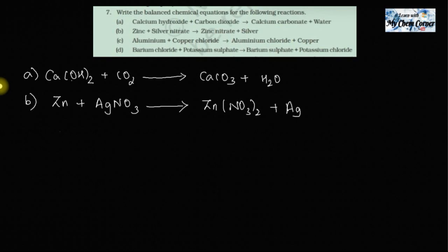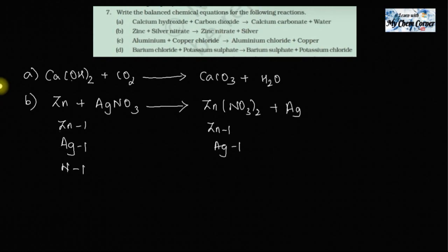Now let's balance this equation. Zn is one on each side. Silver is one on the left but one on the right as well. Nitrogen: one on the left but two outside the bracket on the right — so two of it. Oxygen: three on the left, but three into two gives six on the right. There is a discrepancy in nitrogen and oxygen.